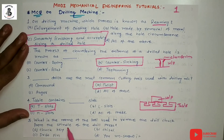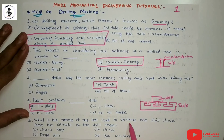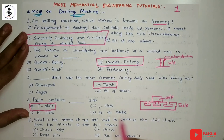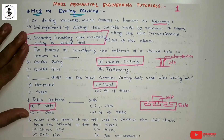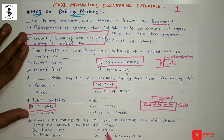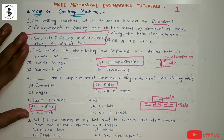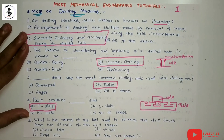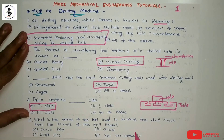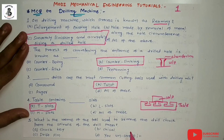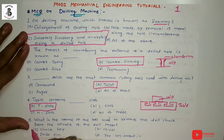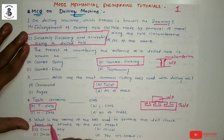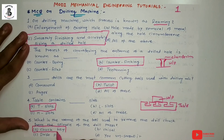What is the name of the tool used to remove the drill chuck from the spindle of the drill press? Option A: chuck key, option B: chisel, option C: drift pin, option D: unscrew it. For the removal of the drill tool from the machine chuck, a chuck key is used to remove the drill bits from the machine.